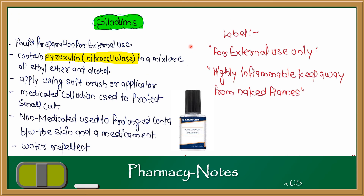Now let's talk about collodions. Collodions are less commonly seen but they are a liquid preparation, monophasic dosage form, for external use. They contain pyroxylin (nitrocellulose) in a mixture of ethyl ether and alcohol. They are applied using a soft brush or applicator to a particular part of the skin.